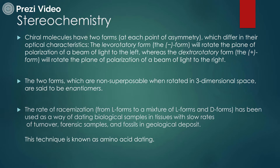The rate of racemization — that is, the rate of conversion from the L form to the D form — has been used in dating various biological samples and tissues with slow rates of turnover, and is widely used in forensic sciences. This technique is known as amino acid dating. Just as you may have heard of carbon dating, amino acid dating tracks the racemization process from L form to D form through slow degradation of amino acids.